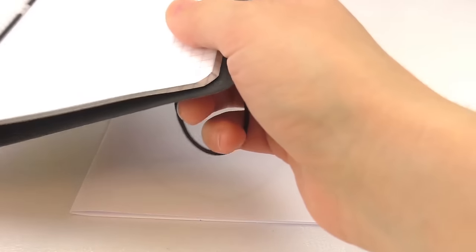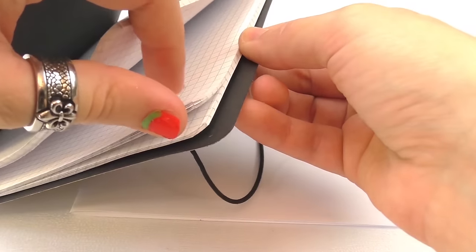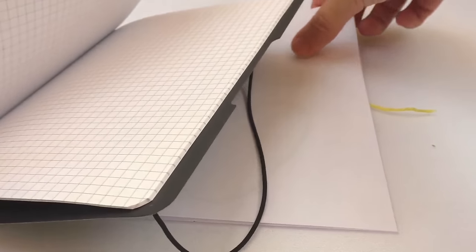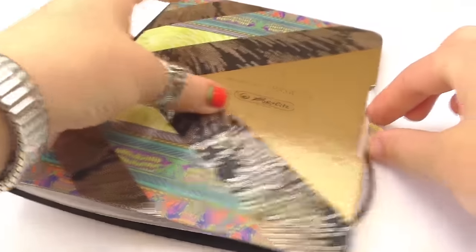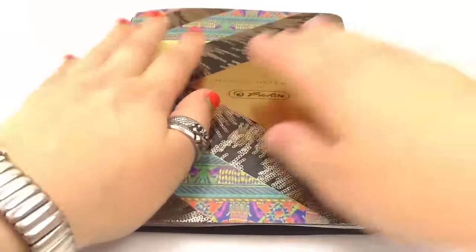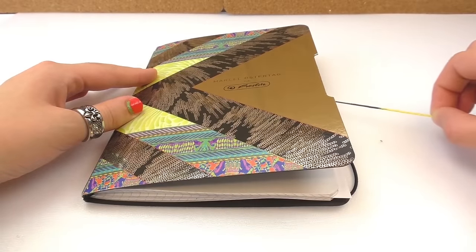So now we grab our notebook and open it in the middle more or less. We're going to put the piece of paper inside of it. Like this. We're going to press very hard and wait for a couple of seconds. Let's keep pressing, and then we're going to remove the string.